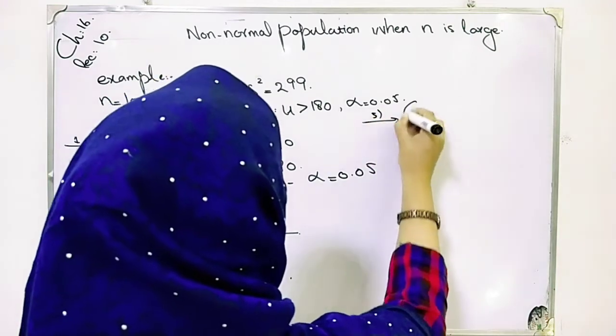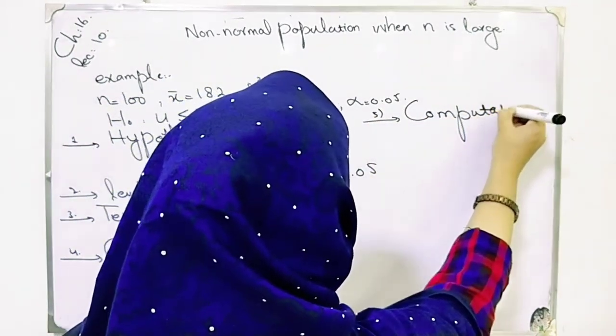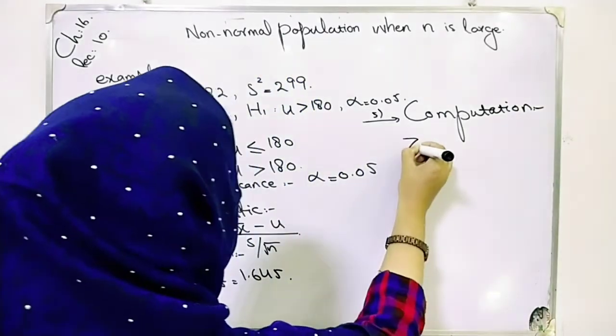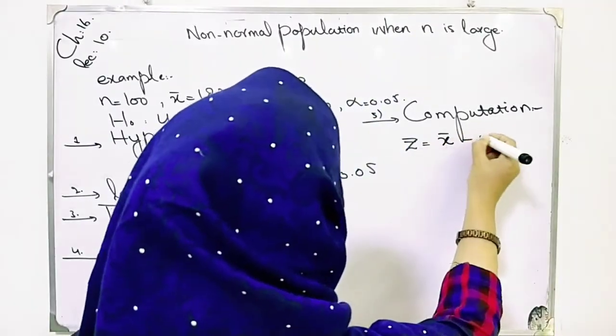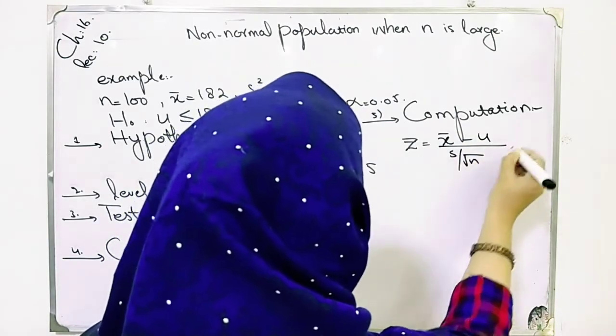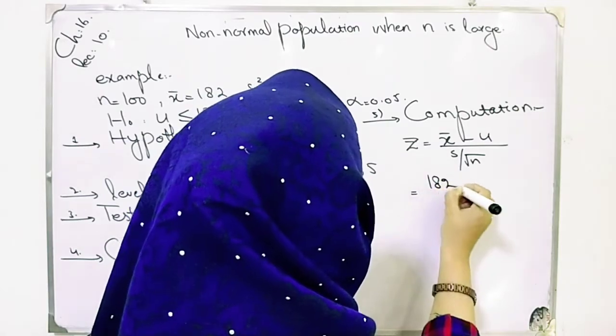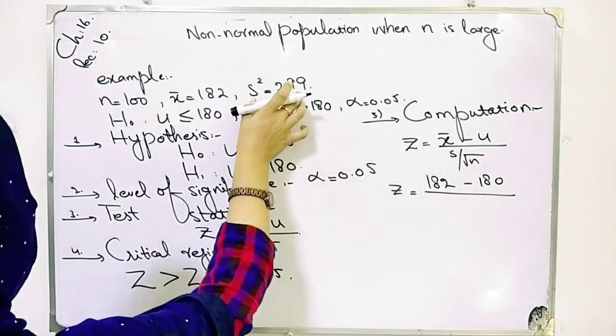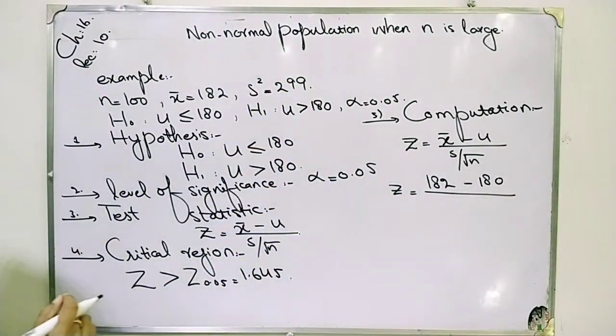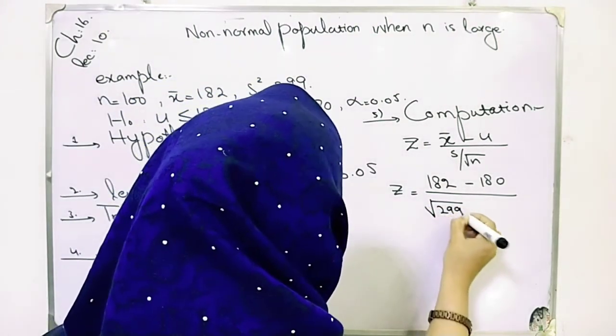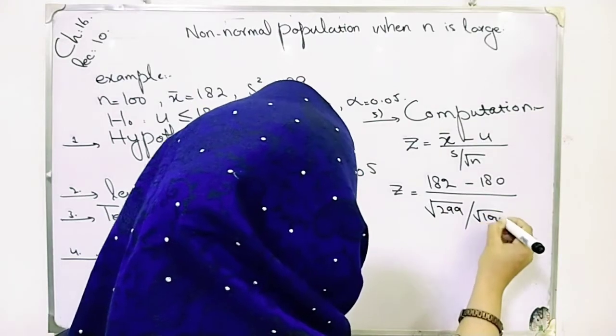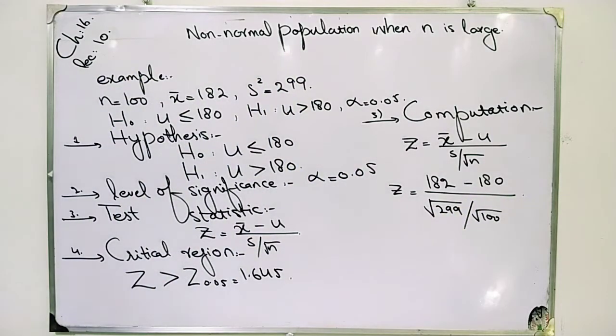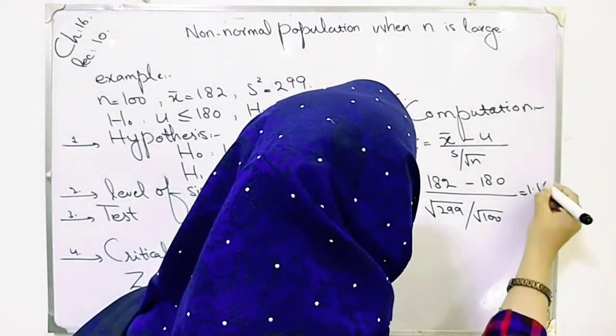Then fifth is computation. We have to compute the values and compare them. Now we put the values: x̄=182, μ=180, standard deviation is √(s²)=√299, and n=100. When we solve, z = (182-180)/(√299/√100) = 1.16.